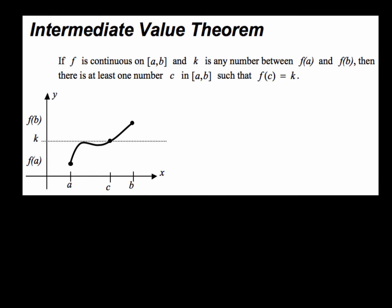The Intermediate Value Theorem states if f is continuous on the closed interval [a, b], and k is any number between f(a) and f(b), then there's at least one number c in [a, b] such that f(c) = k. So we're going to dissect this and break it down into two things that you're going to have to be able to find.